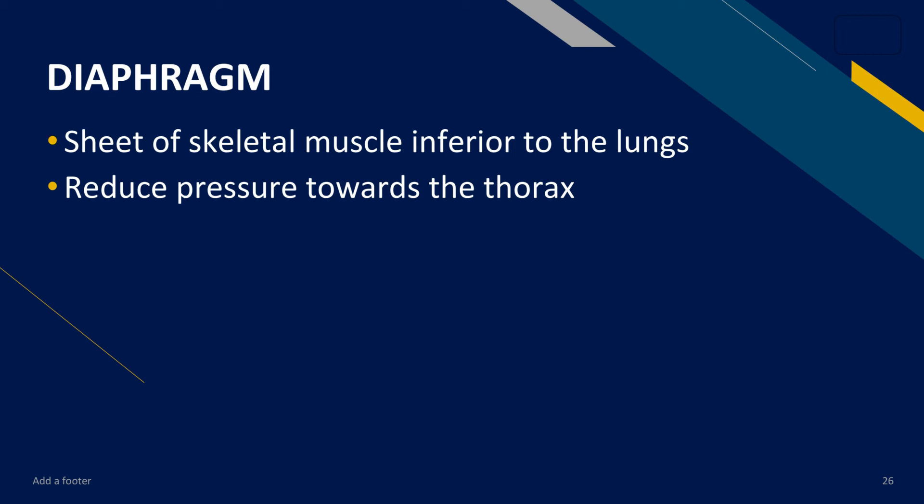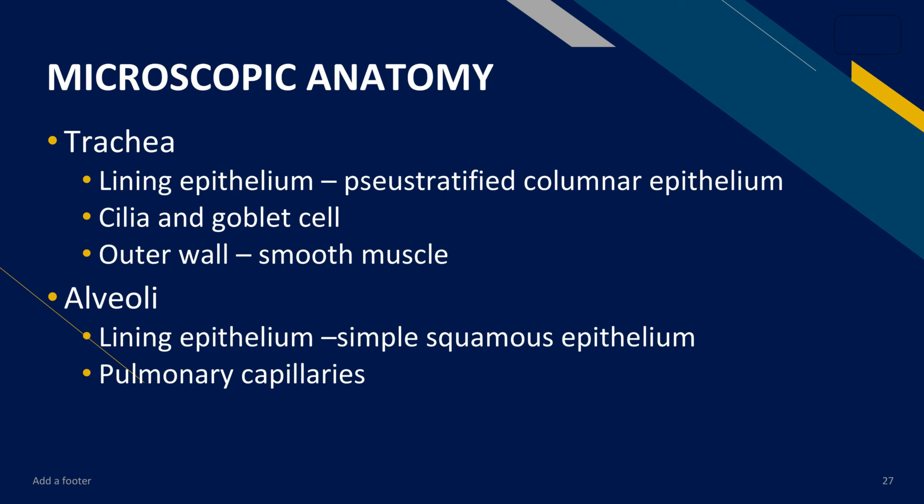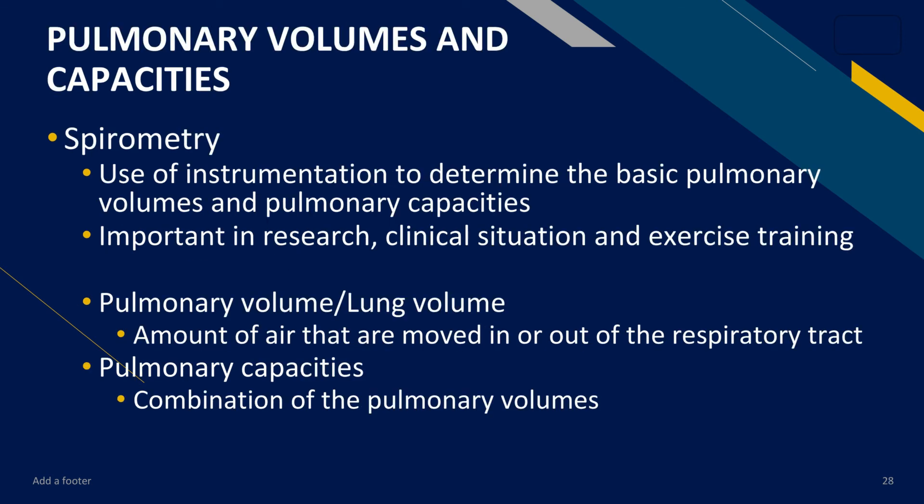The diaphragm is a sheet of skeletal muscle inferior to the lungs that helps pull air in and push it out, reducing pressure toward the thorax whenever the lungs expand. For the microscopic anatomy of the respiratory system, most of the respiratory tract from the nasal cavity is lined with pseudostratified columnar ciliated epithelium, which also lines the trachea and includes cilia and goblet cells. The alveoli are lined with simple squamous epithelium — called type 2 pneumocytes — and contain many pulmonary capillaries for gas exchange.